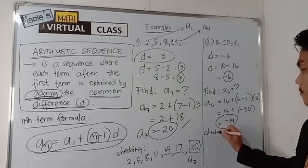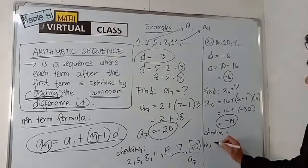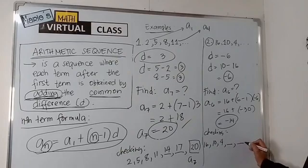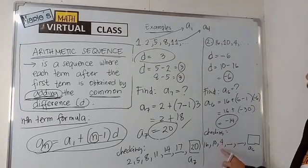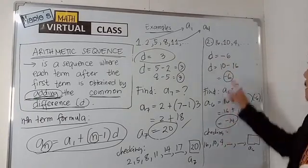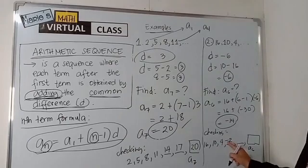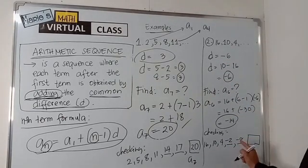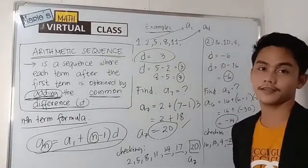Let's do the checking. If this is really the sixth term, we have here 16, 10, and 4. We have the fourth term, fifth term, and answer. This is our sixth term. So, let's do adding the common difference. 4 plus negative 6. Positive plus negative would be negative 2. So, negative 2 plus negative 6, it would be negative 8. Negative 8 plus negative 6 is negative 14. Therefore, our answer is correct.